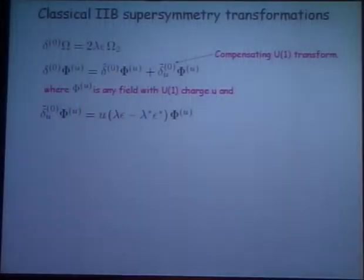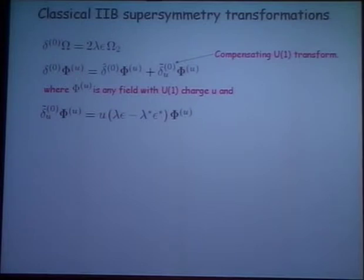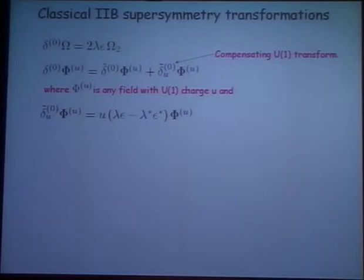So let me now proceed, nevertheless, in this very general sense, and then give some examples. The structure of the zeroth order transformations: there is some transformation on the scalars, and then a transformation on any of the other fields which carry a U(1) charge U. Any of the other fields listed has one piece, which I've called delta hat, which preserves the U-symmetry. And then there's a piece which is present because we're talking about the theory where we've gone to the coset, where we fix the U(1) gauge, and therefore there's a compensating gauge transformation associated with any supersymmetry transformation.